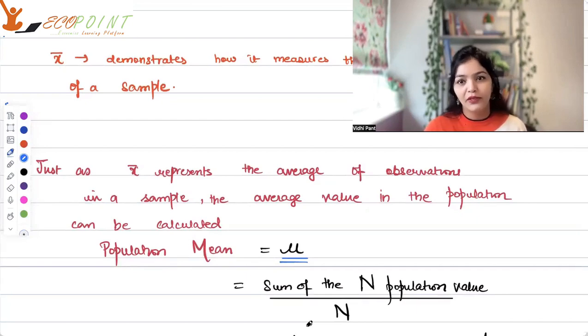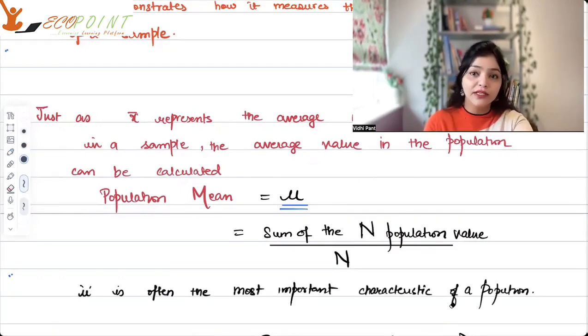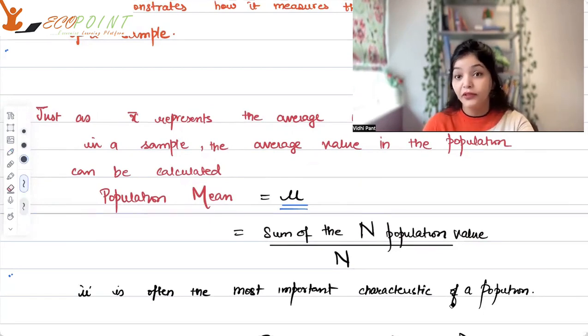See, the difference between sample mean and population mean basically is sample mean is easy to figure out. Sample mean, you have sample, you can find out sample mean. Population mean is not very easy to figure out. And that's the reason why we focus on sample. Sample gives us some representation of the population. In fact, please remember always mu is actually one of the most important, often the most important characteristic of a population.